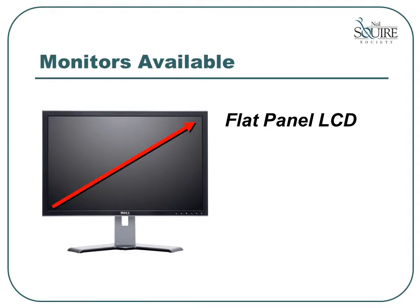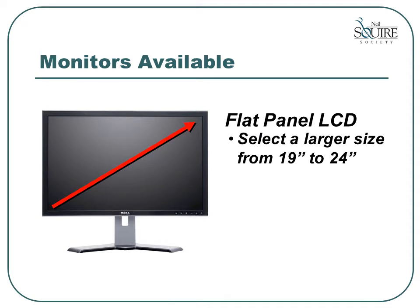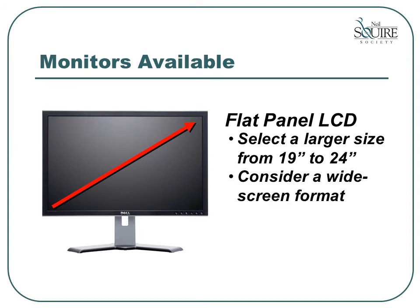One of the first options to consider when you require accommodations for a vision impairment is to select a larger monitor. Most monitors on the market today range between 19 inches and 24 inches, measured diagonally. You may also consider a widescreen format, which is very popular for playing wide-format movies, but also very useful for displaying more text across the screen, even in a larger font.